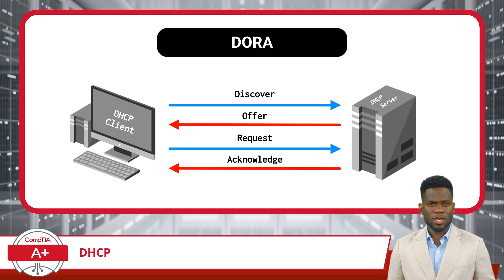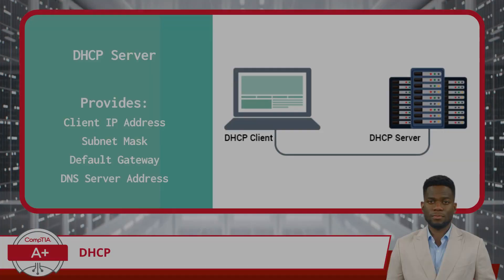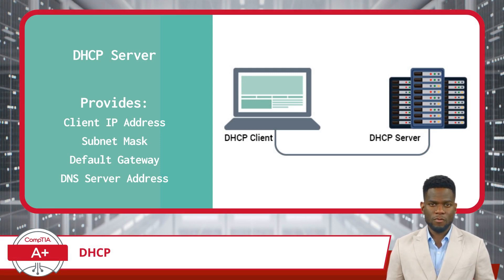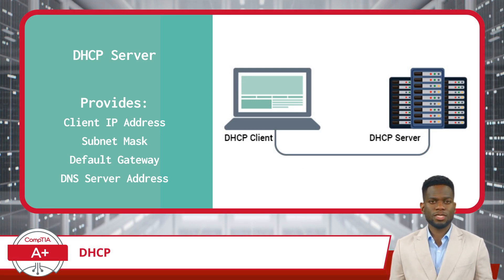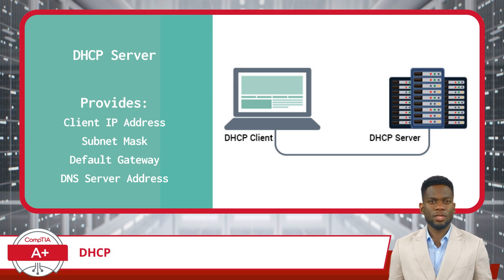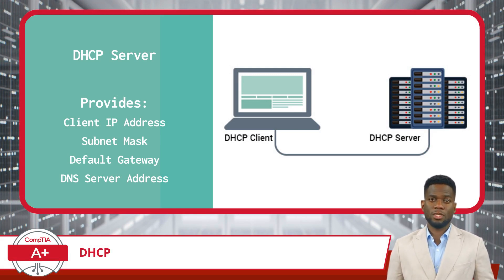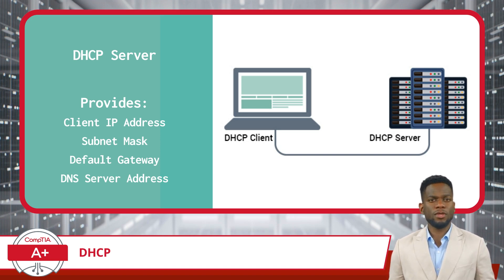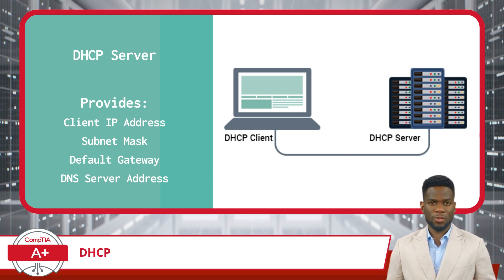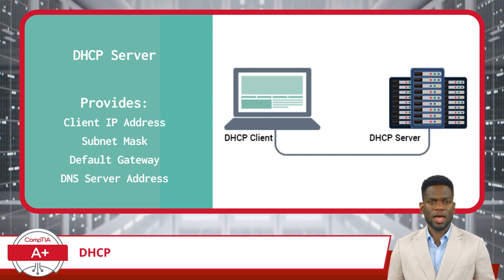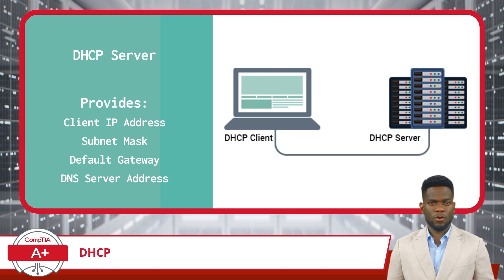It is also important to note that DHCP does more than just handle IP addresses. It also configures other essential settings for network communications, such as the subnet mask, which determines the network's size, the default gateway for connecting to other networks, and information on how to find the network's preferred DNS server or servers in order to resolve domain names into IP addresses.